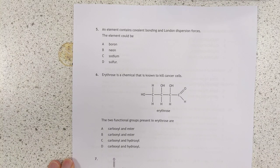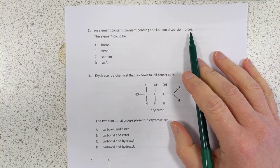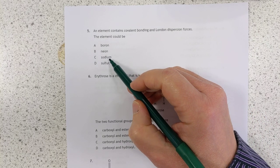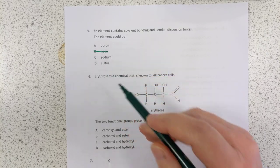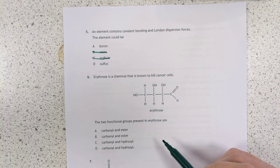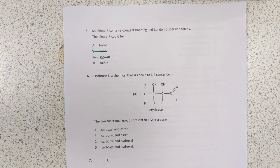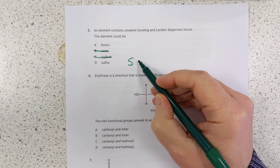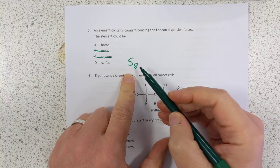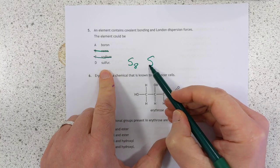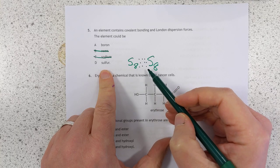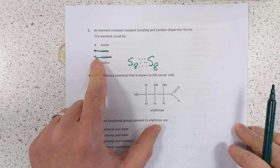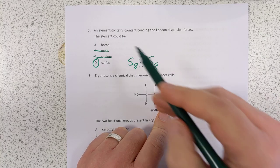Number 5. An element contains covalent bonding and London dispersion forces. If it's got covalent bonding, I would instantly throw out B, because it's a group 8 element. I would also throw out C, because it's a metal. Covalent bonding exists inside sulfur molecules. Sulfur molecules exist as little rings of 8. And then it's held to the next door neighbour, S8, by London dispersion forces. So I'm going to go with D on that one. Boron is a giant covalent network, so the whole thing is locked together by covalent bonding. So that's why I'm going to throw out A.